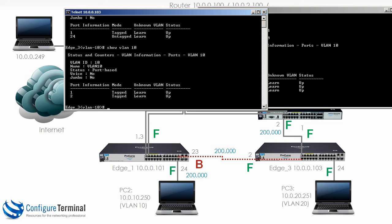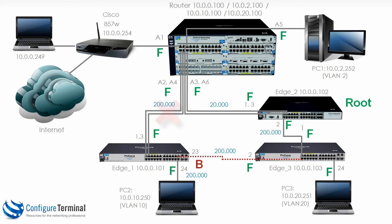We have sorted out a potential issue — if the link goes down between the router and edge 1, we wouldn't have had connectivity to PC2, but now we will because VLAN 10 is tagged on this link, tagged on this link, and tagged on this link.